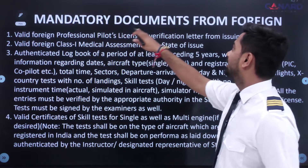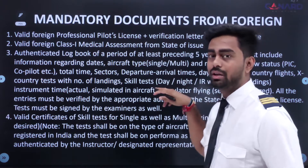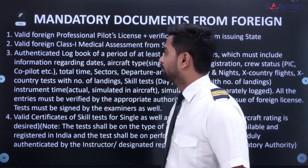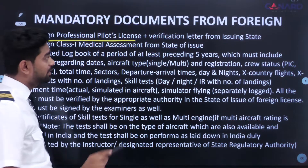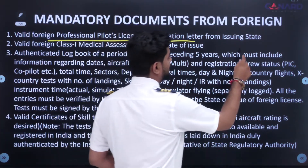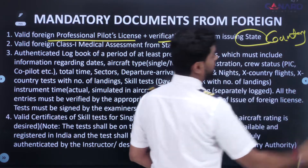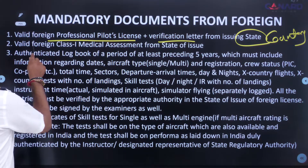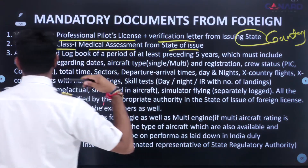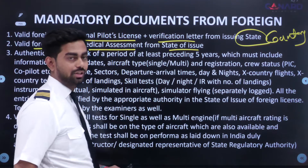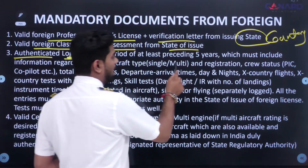Let's get into the details. These are the mandatory documents from the foreign country where you are flying. First is your valid professional pilot license with a verification letter from the issuing state — the country from where you have done your flying. Next is a valid foreign Class 1 medical assessment from the state of issue — again, from the country where you completed your flight training.